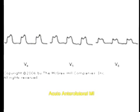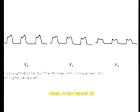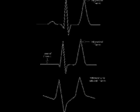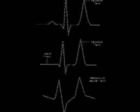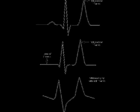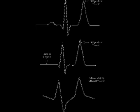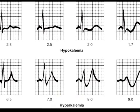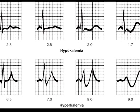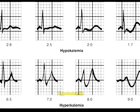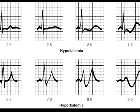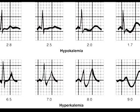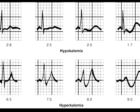Now let us see abnormalities in electrolyte disturbances. First, hyperkalemia. In hyperkalemia you will see big tent-shaped T waves. You can see here the T wave is as big as the QRS complex — this is very characteristic of hyperkalemia, that is high potassium level in the blood. In hypokalemia, that is low potassium level, you can see U waves following the T wave.